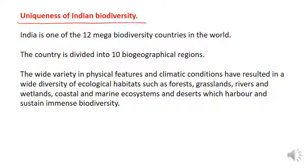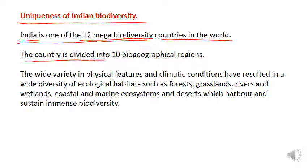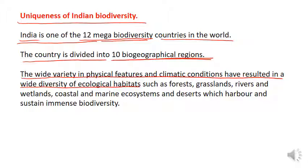Uniqueness of Indian biodiversity: India is one of the 12 mega biodiversity countries in the world. India जो है 12 mega biodiversity countries में आता है. The country is divided into 10 biogeographical regions. The wide variety in physical features and climatic conditions have resulted in a wide diversity of ecological habitats such as forests, grasslands, rivers, wetlands, coastal and marine ecosystems, and deserts, which harbor and sustain immense biodiversity.